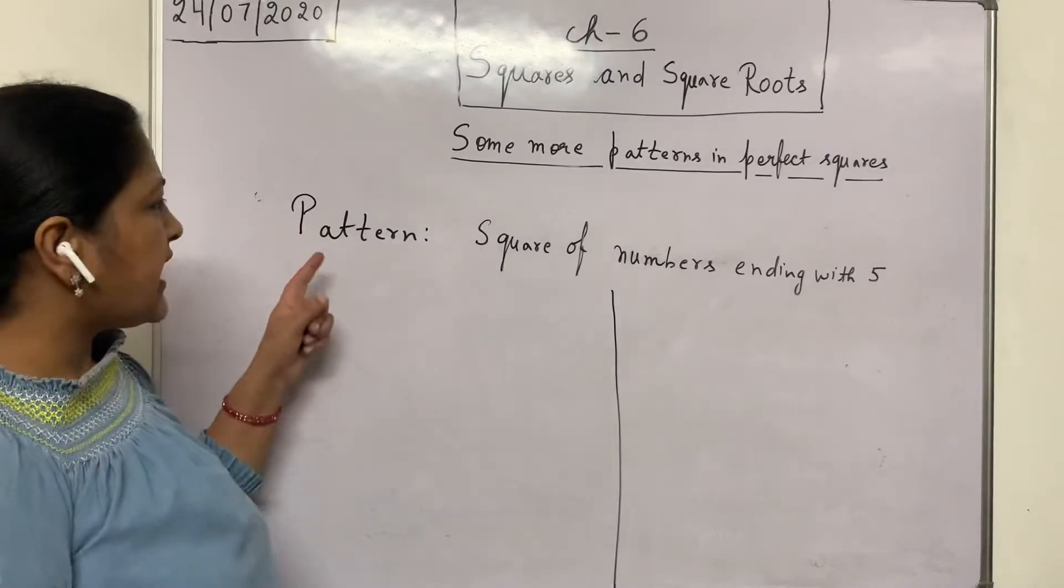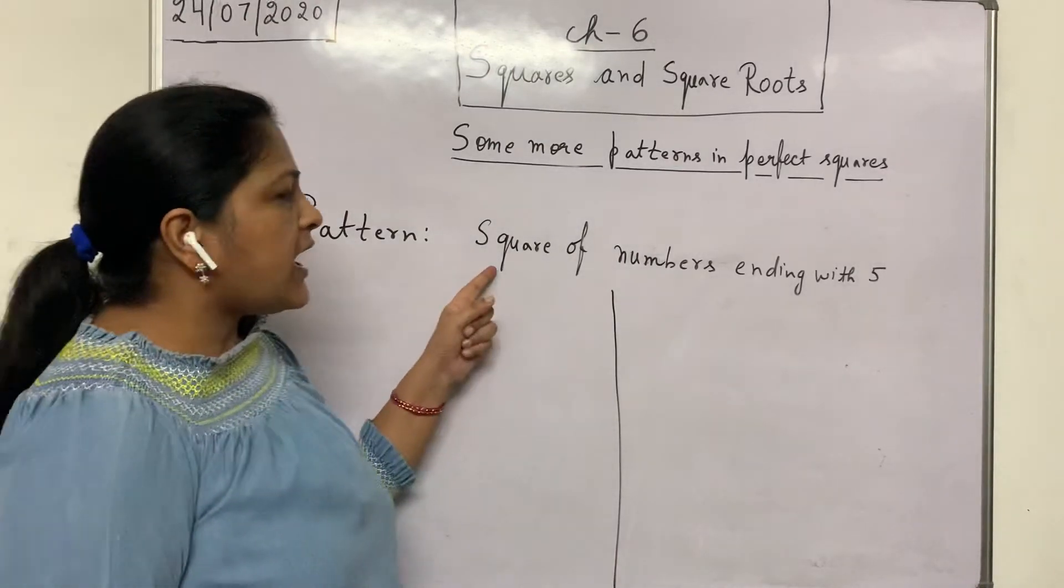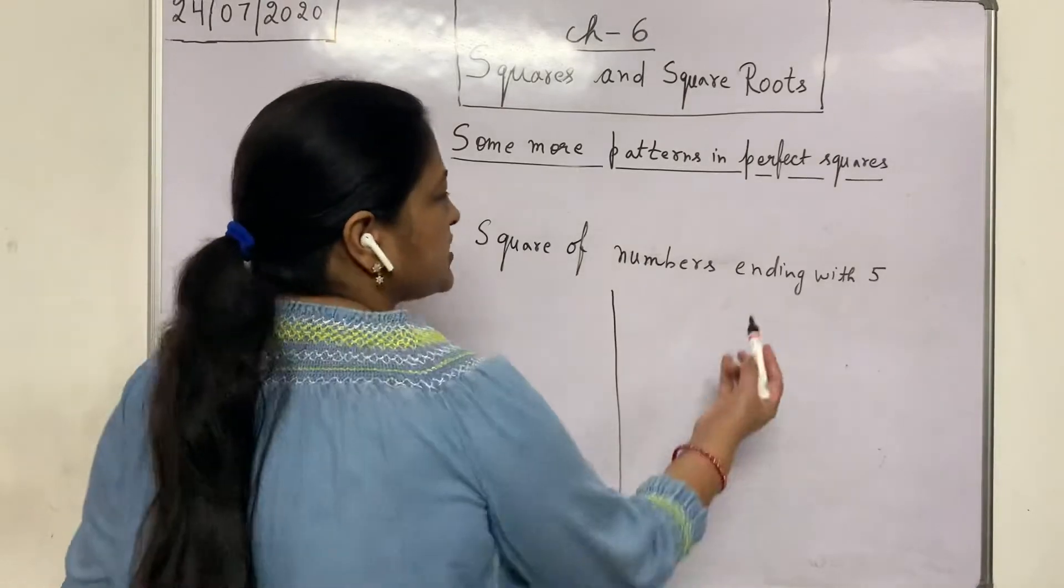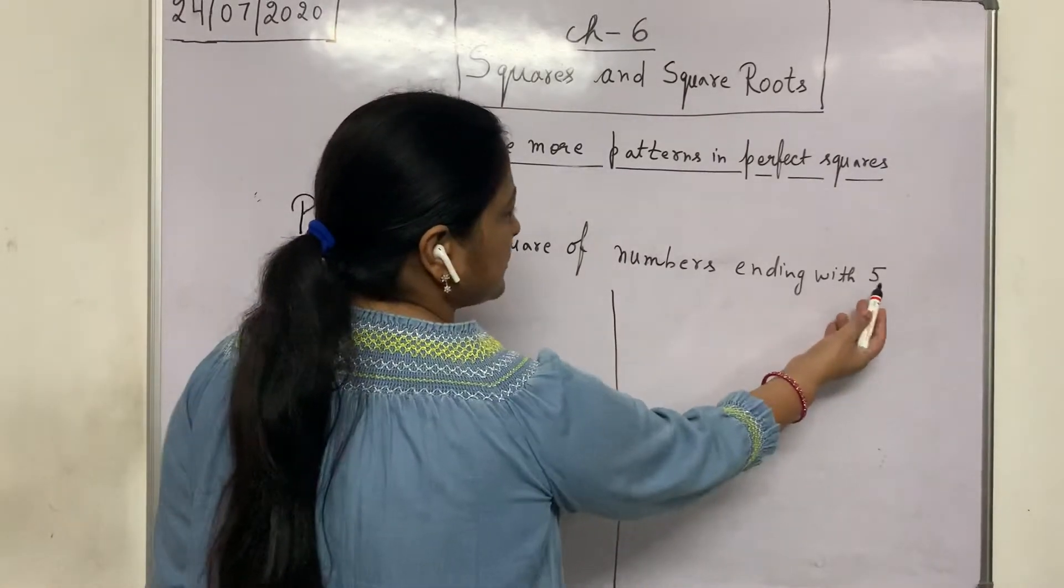Let us learn another pattern. Square of numbers which are ending with 5.